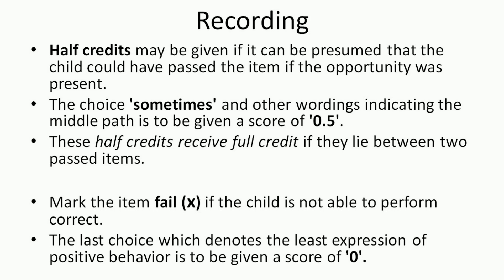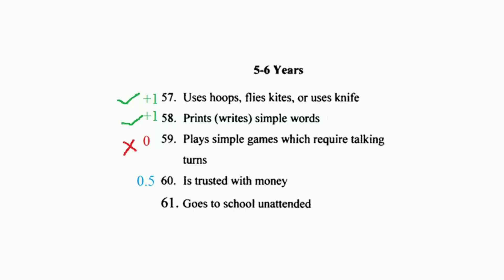Next is half credit — half credit may be given if it can be presumed that the child could have passed the item if the opportunity was present. The choice 'sometimes' and other wordings indicating the middle path are given a score of 0.5. Remember that these half credits receive full credit if they lie between two passed items. Mark the item fail — place a cross if the child is not able to perform correctly — and this choice, denoting the least expression of positive behavior, is given a score of zero.